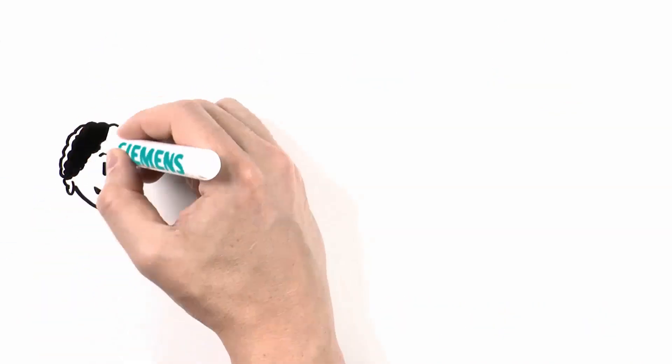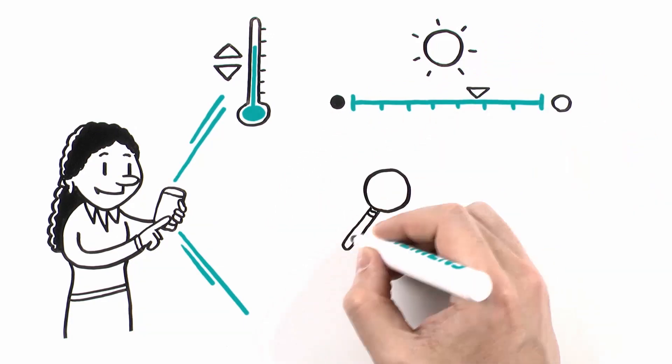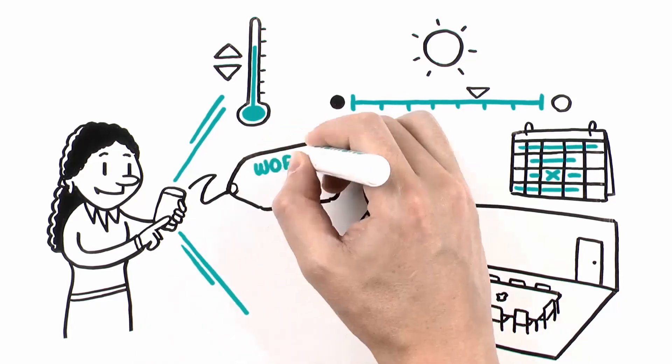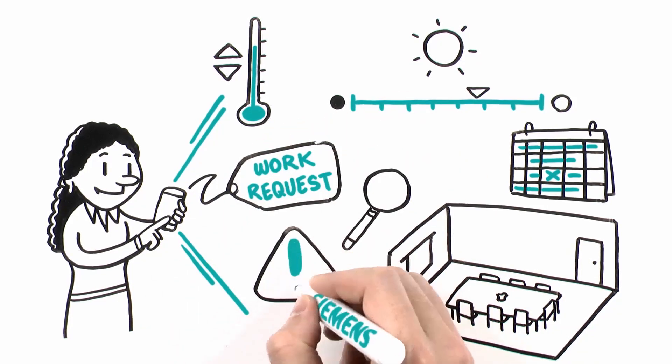Through a workplace user experience application, occupants can warm or cool spaces on demand, change light levels in open spaces or meeting rooms, find and book meeting rooms efficiently based on availability, and submit work requests or report issues to facility managers.